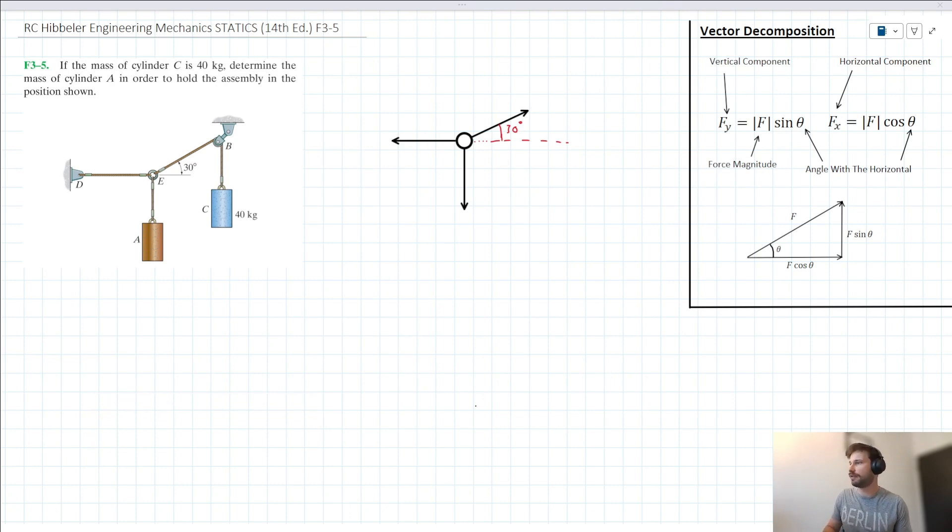I've pre-drawn a bit of our free body diagram here. There are a couple of things to grasp with this problem. First, this 40 kilo cylinder here - basically, the weight of this cylinder is carried over in the tension of this rope into rope EB. So we can describe this force as 40G, since it's 40 kilos.